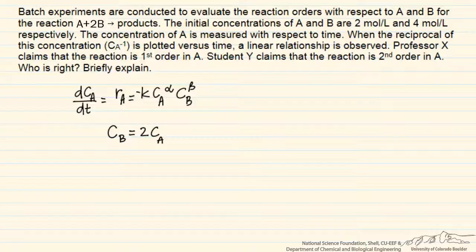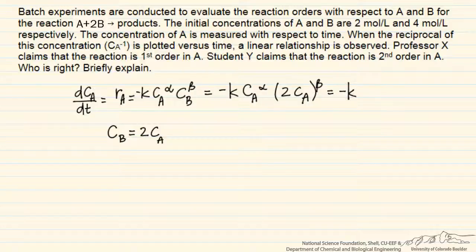Because of that, we can actually replace the concentration of B with 2 times the concentration of A. We then collect terms in that expression, so our differential equation reads that dCA/dt is equal to negative k times 2 raised to the beta power times the concentration of A raised to the alpha plus beta power. We see that we have this alpha plus beta term.